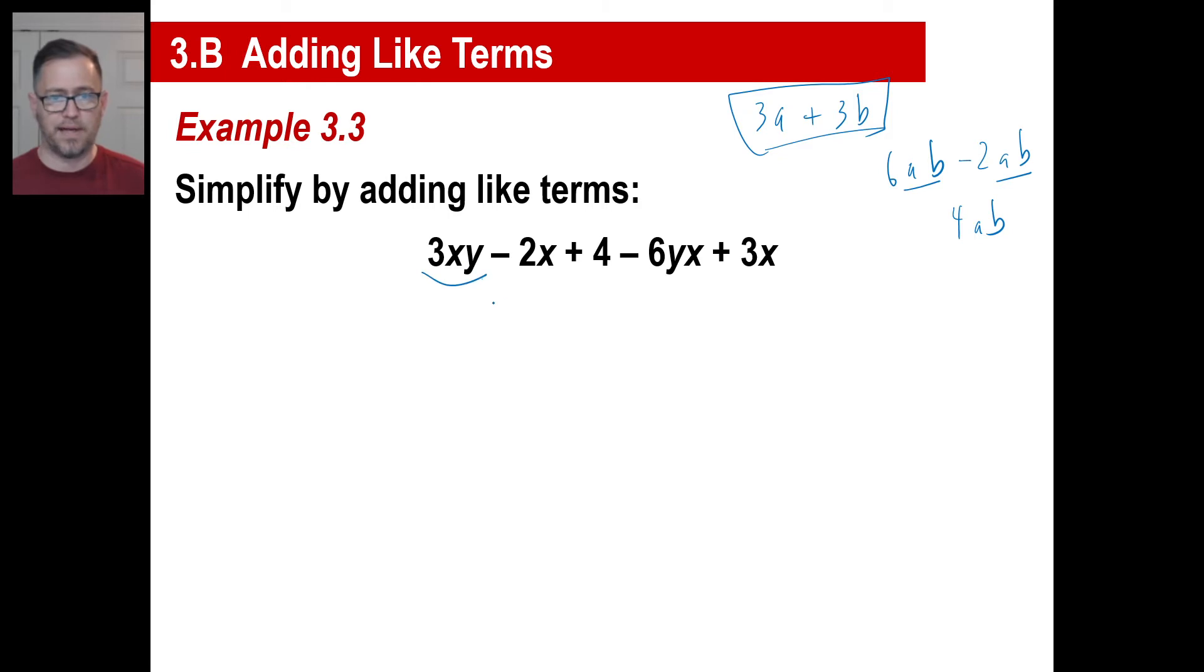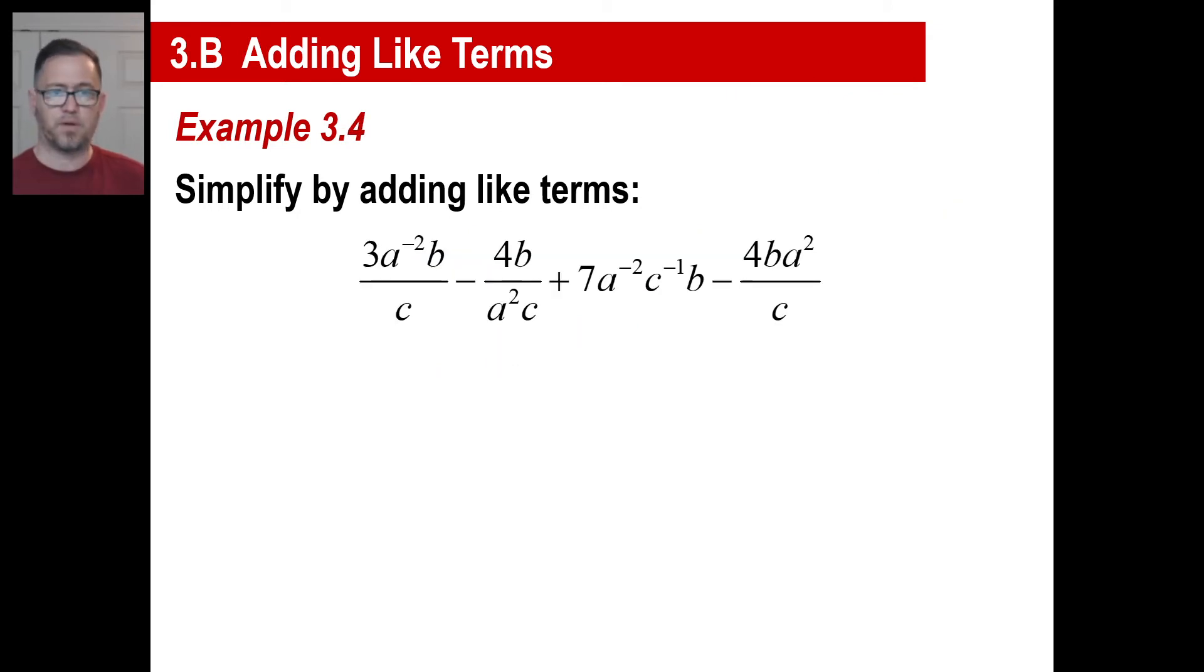So first thing I would do is go to the very left. Are there any other xy's across here? Oh yep, there's one right there. So if I have 3 of something and I have negative 6 of something, that means I have negative 3 of that something. Now I have a negative 2x, anything else like that? Yep, there it is, a positive 3x. So negative 2x plus 3x is a plus a positive 1x. And then there's a 4 sitting there left over, just plunk it on the very end. Don't try to mash those together because they're not like terms.